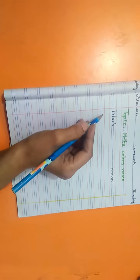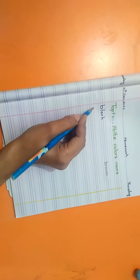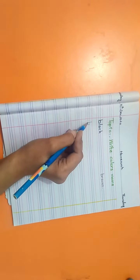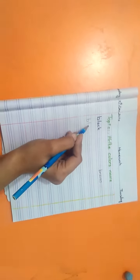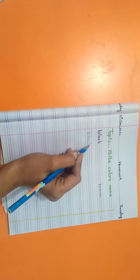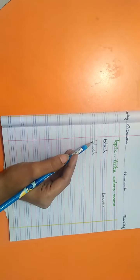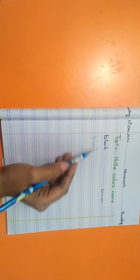So, now we write on our notebook. Firstly, we write black. B-L-A-C-K. Black. Let's repeat it. B-L-A-C-K. Black.